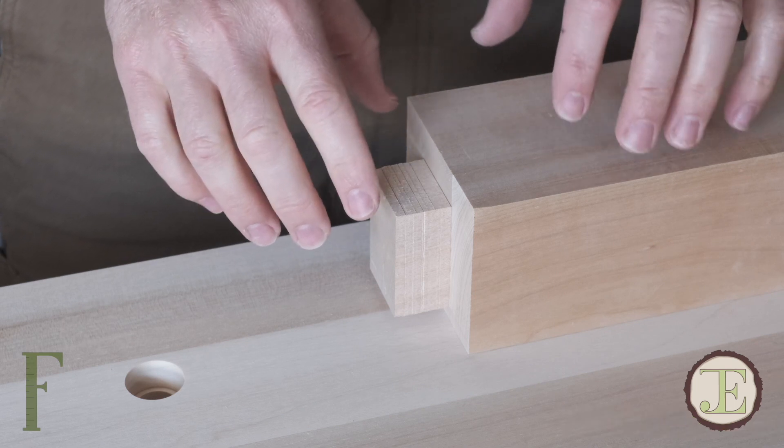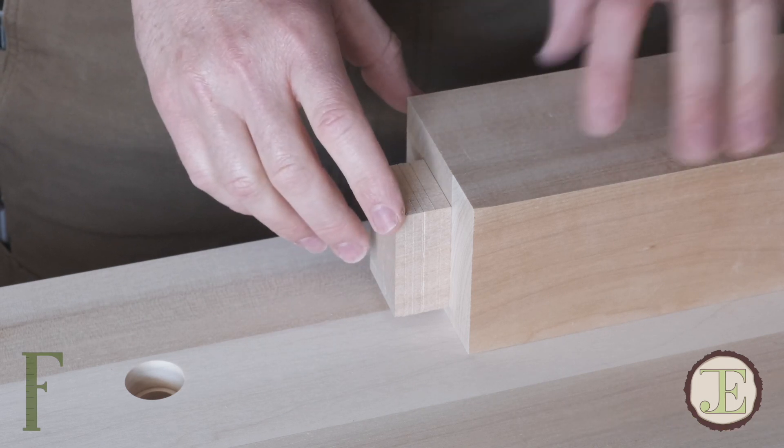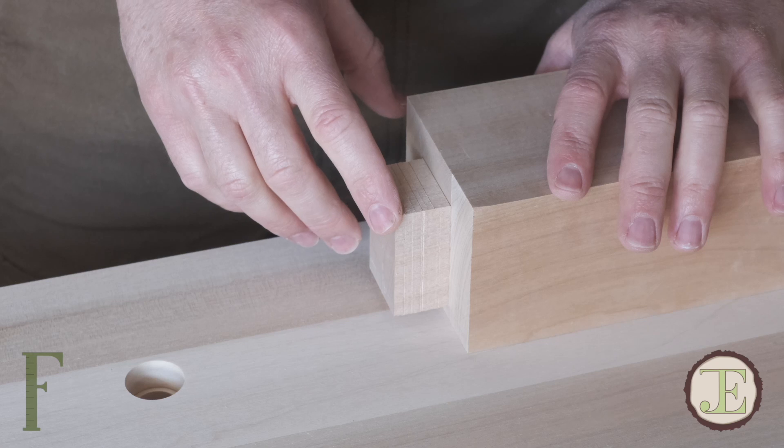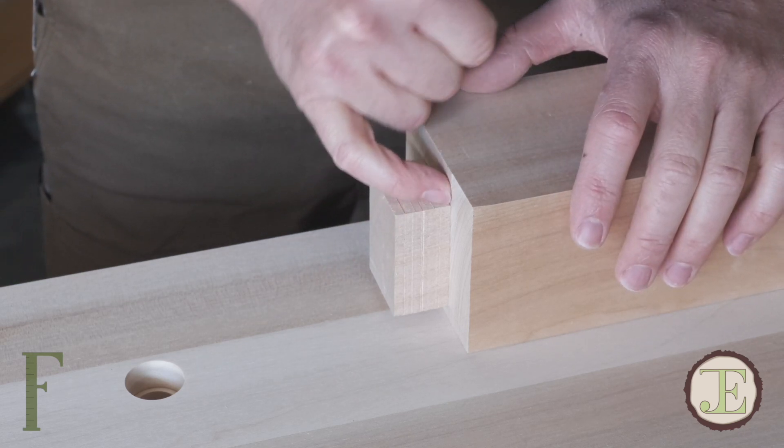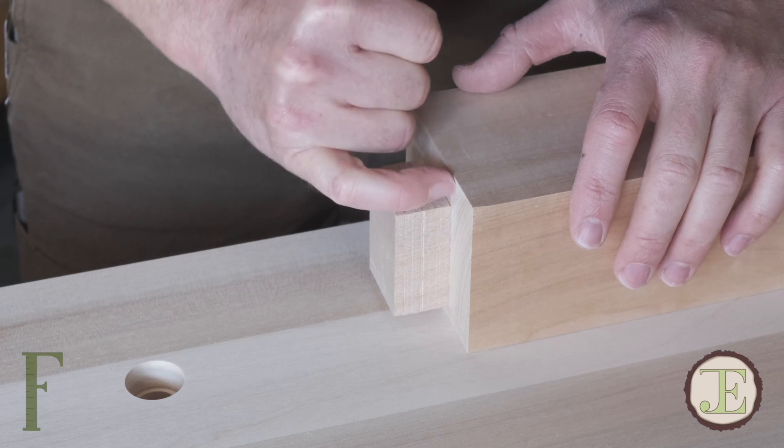At some point either I didn't hold this part tight to the cross cut fence or the fence was slightly out of square, but you should be able to see that there's a sort of a bright line that goes across and it's a step.